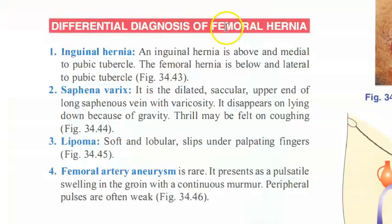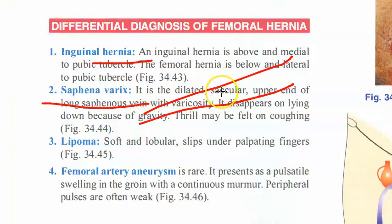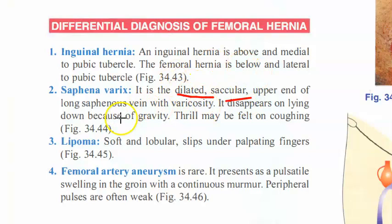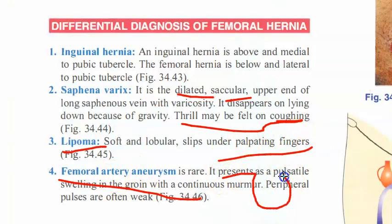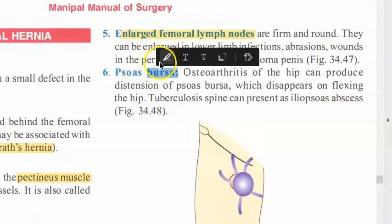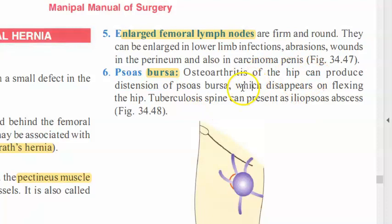Differential diagnoses of femoral hernia include: inguinal hernia, saphenovarix (dilated sapheno-femoral junction — thrill felt on coughing, disappears on lying down), lipoma, femoral artery aneurysm, enlarged lymph node, and psoas bursa (psoas bursitis from osteoarthritis of the hip).